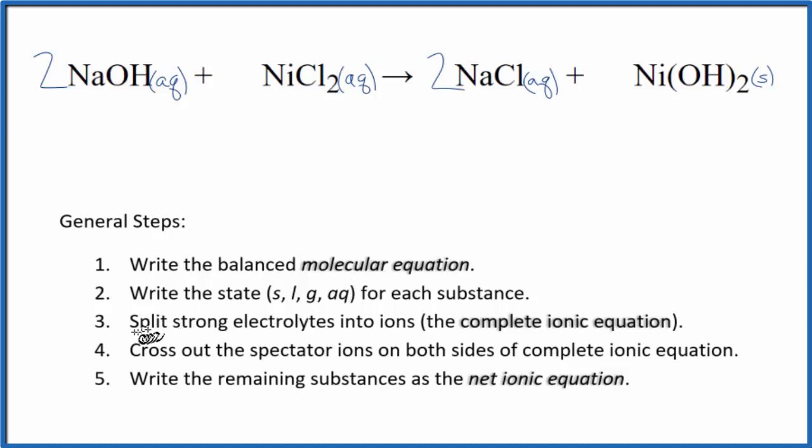Once we have the states, we can split the strong electrolytes into their ions. That'll give us the complete ionic equation. Sodium is in group 1, so it has a 1 plus ionic charge. The hydroxide, that's always 1 minus. Two sodium ions, and I won't write the states right now. Let's do that at the end. Plus the 2 goes to everything, so 2 hydroxide ions.